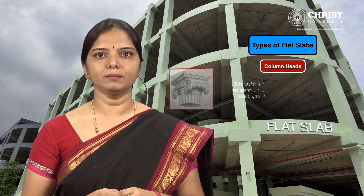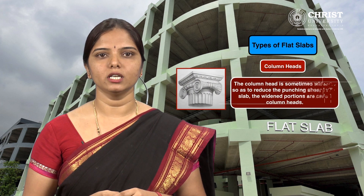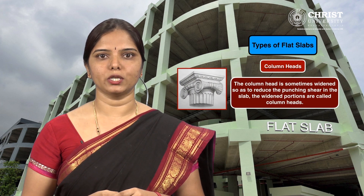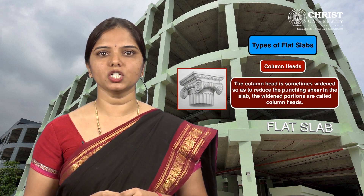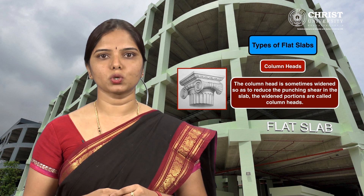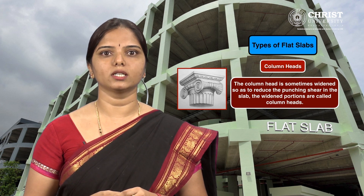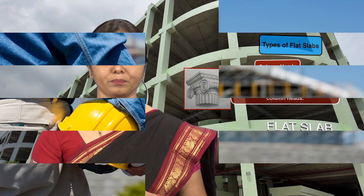Before we go ahead with the design, let us define the meaning of the terms commonly used in the design of flat slabs. Column head: the column head is sometimes widened so as to reduce the punching shear in the slab. The widened portions are called column heads.